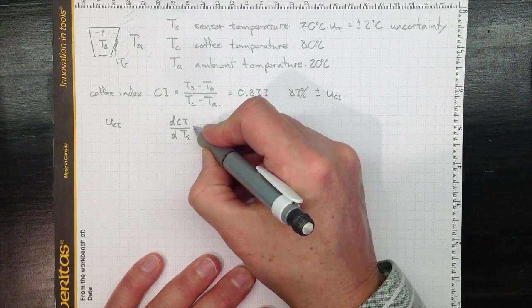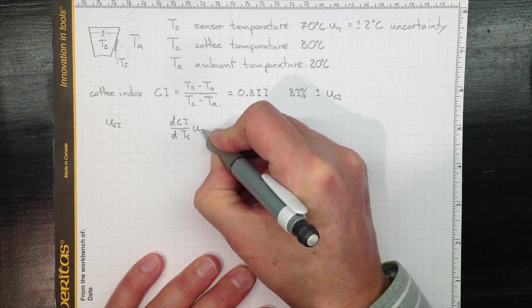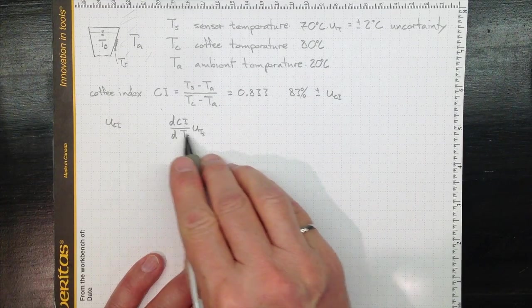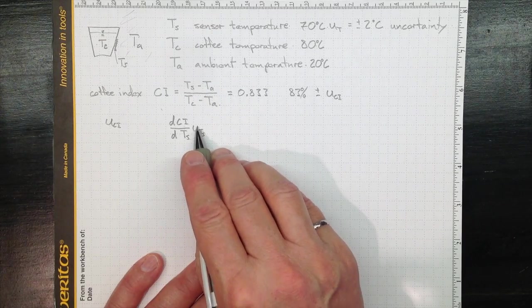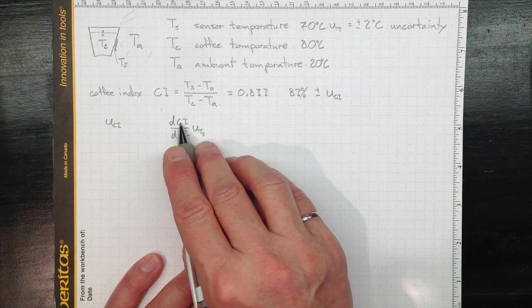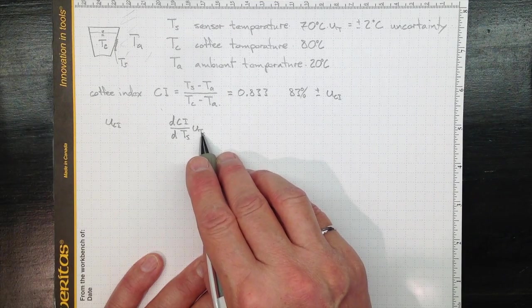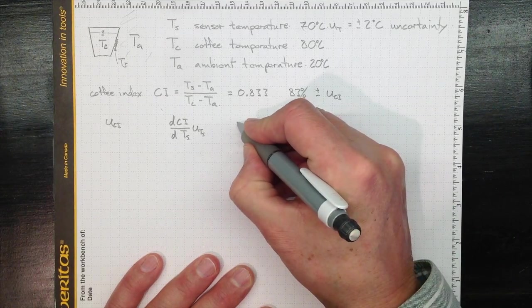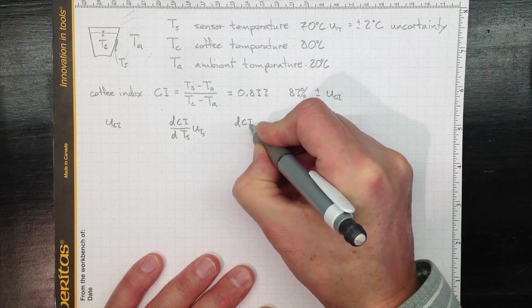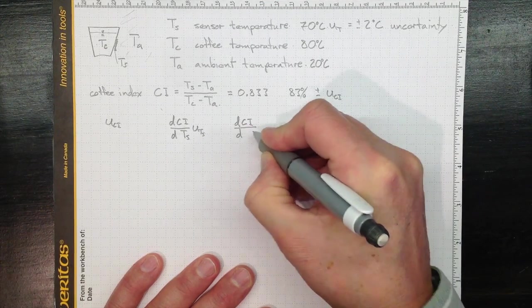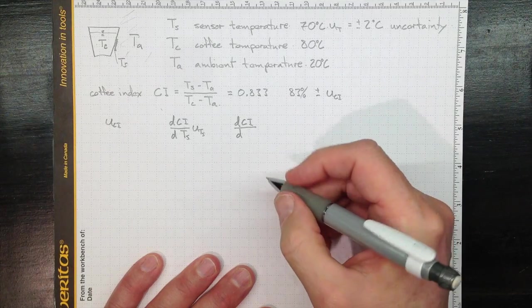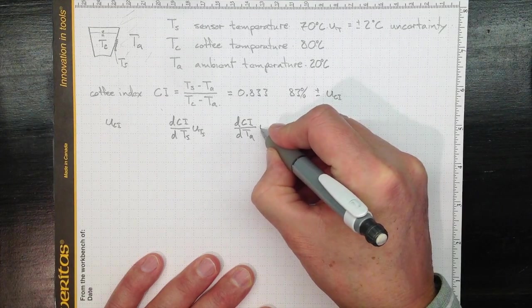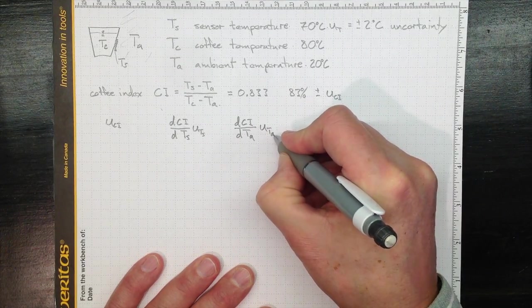And if I multiply that by the uncertainty that I have in my sensor temperature, then that's how big a change I'll see for that uncertainty change in TS. Because this is going to be the change in the coffee index due to that change from uncertainty in TS. Likewise, I'll have a term related to how the coffee index changes if I change the ambient temperature, DCI, DTA. And I'll need to multiply that by the uncertainty in the ambient temperature.